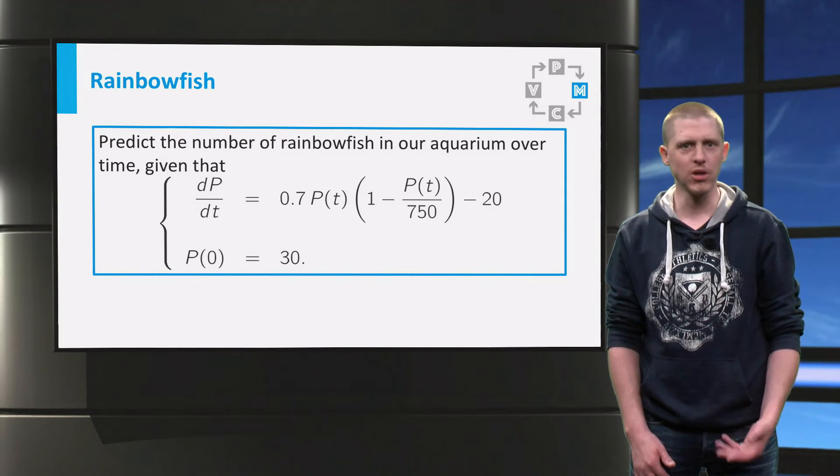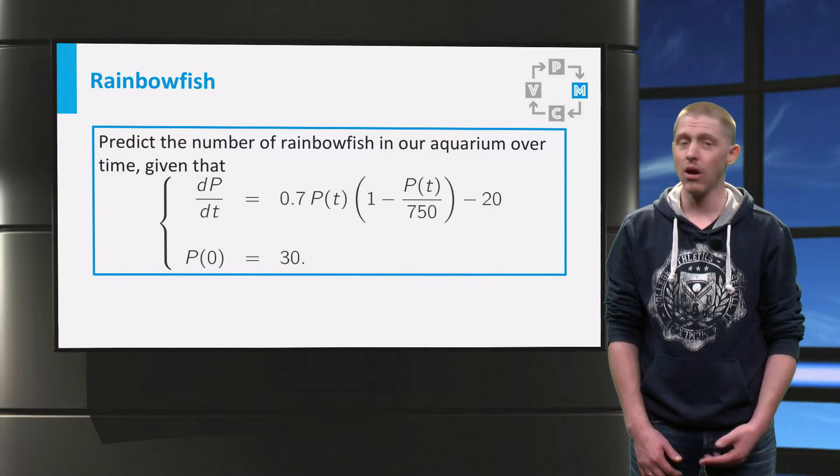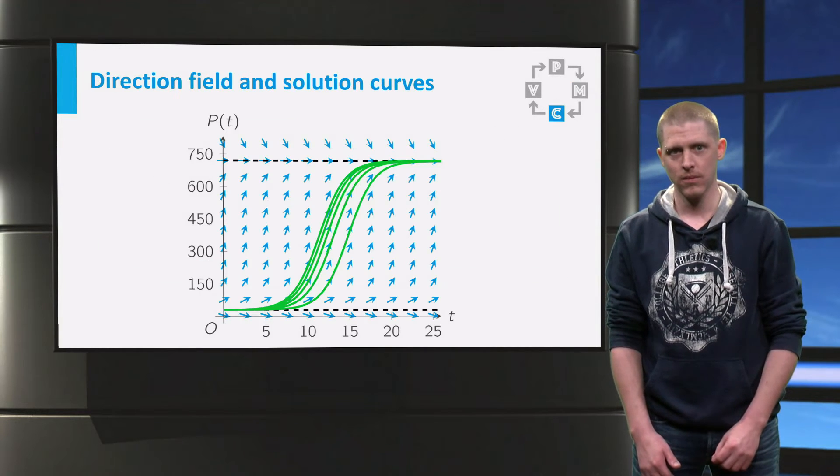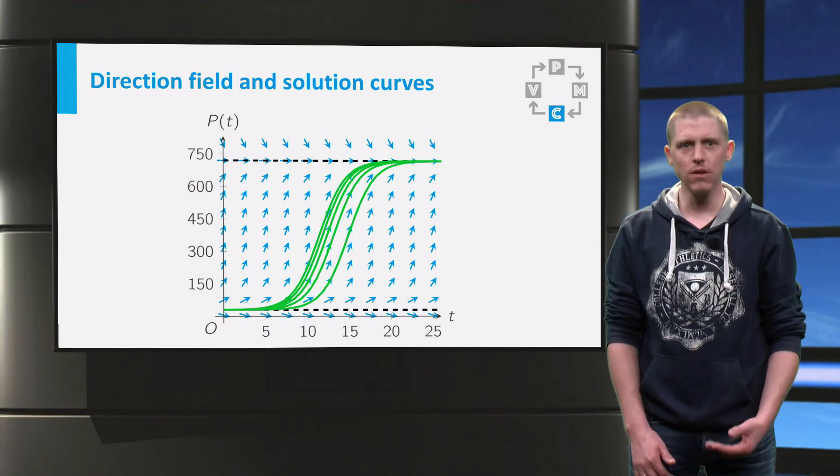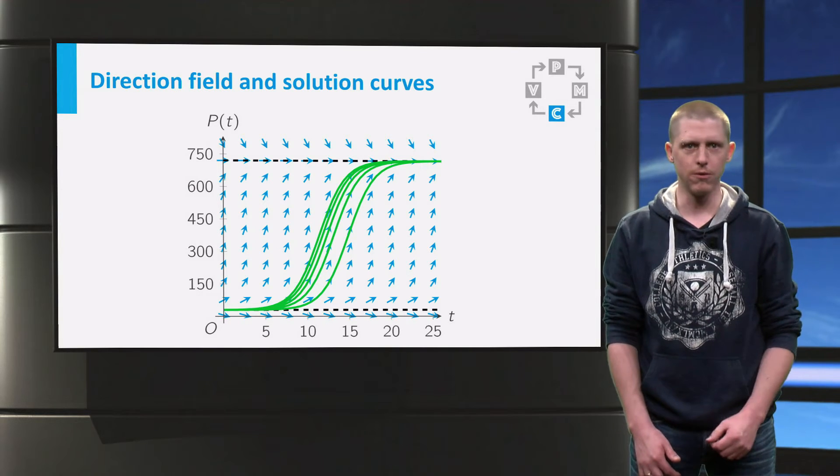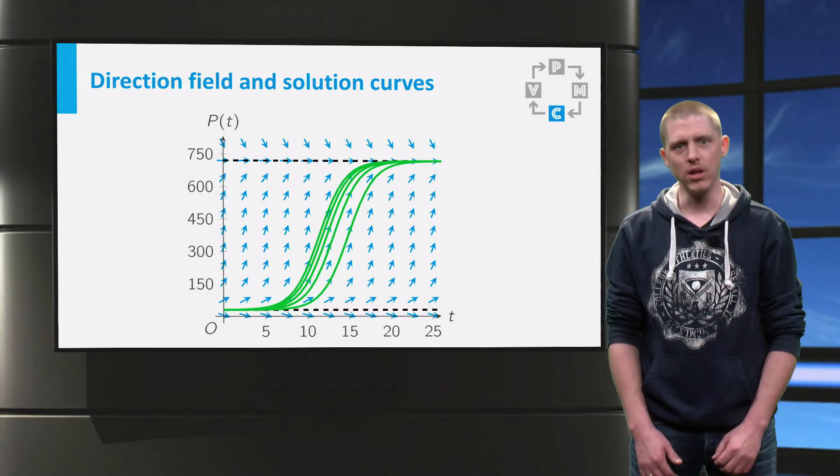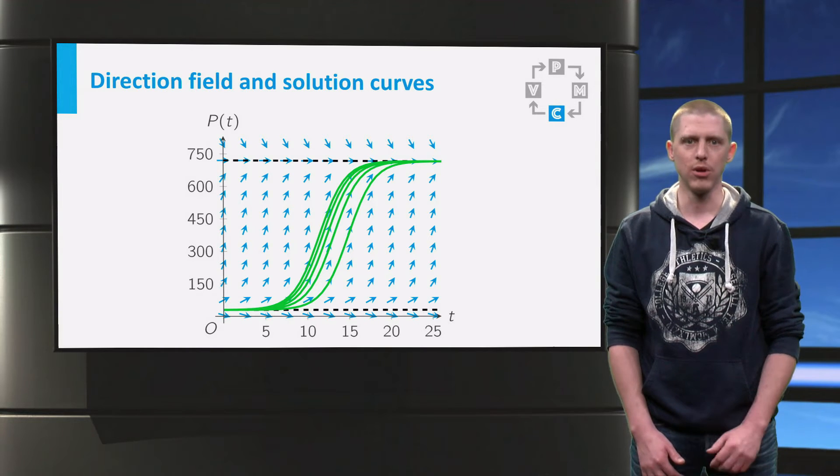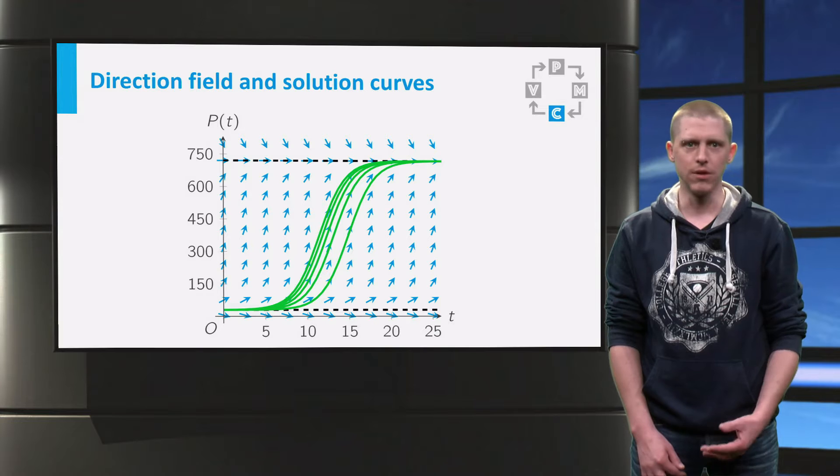The direction field and some possible sketches of the solution are like this. As you can see, each of the sketches starts at 30 rainbow fish and follows the direction field, but each comes close to the equilibrium of 720 at a different time.